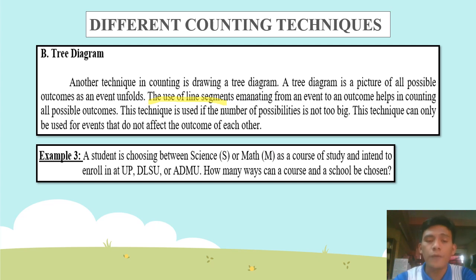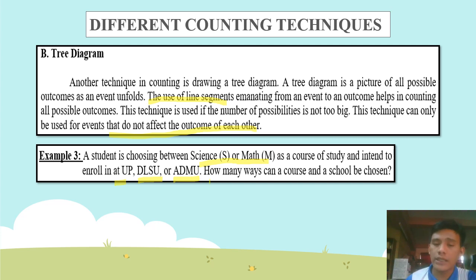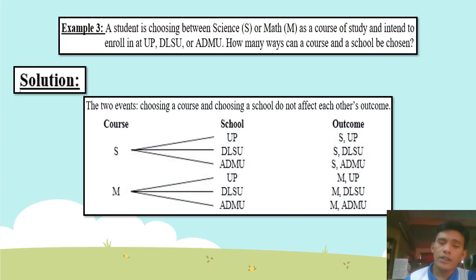This technique can only be used for events that do not affect the outcome of each other. Example: a student is choosing between science or math as a course of study and intends to enroll in UP, DLSU, or Ateneo de Manila University (ADMU). How many ways can a course and a school be chosen? We will use the tree diagram for the solution.